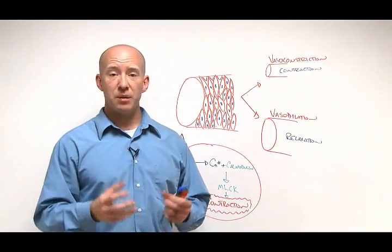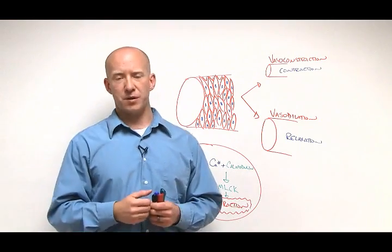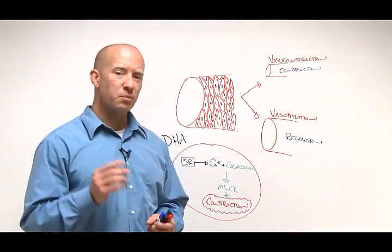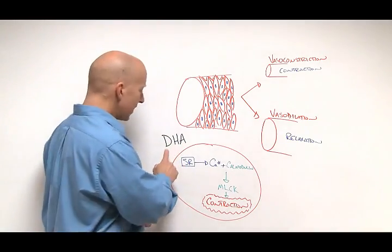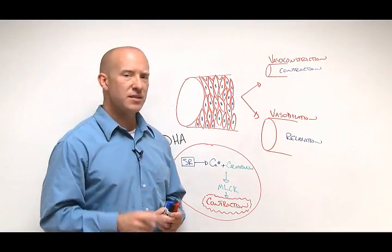EPA and DHA, both omega-3 fatty acids, have been found to help lower high blood pressure, which is obviously very beneficial. But what's really interesting is more recently, the omega-3 fatty acid DHA seems to have a stronger contribution to this. Here's basically how it works.